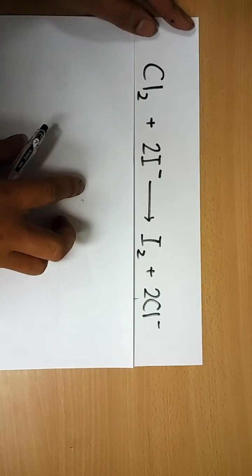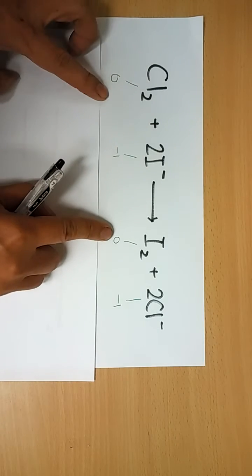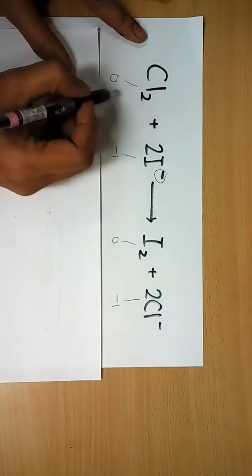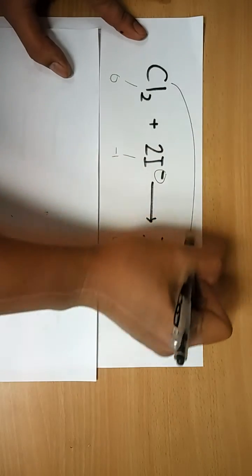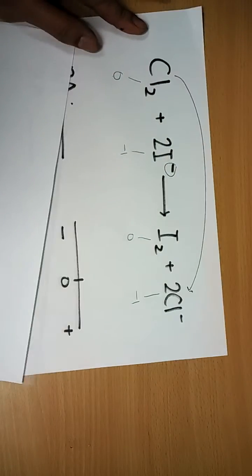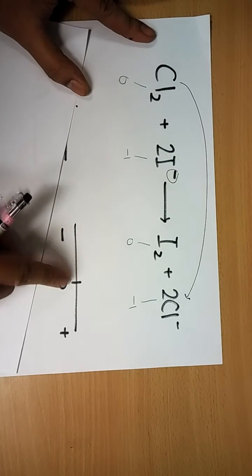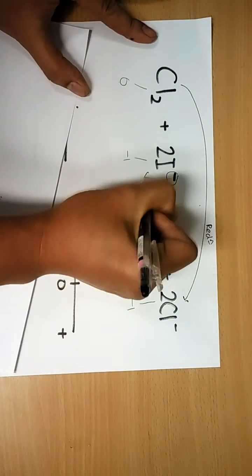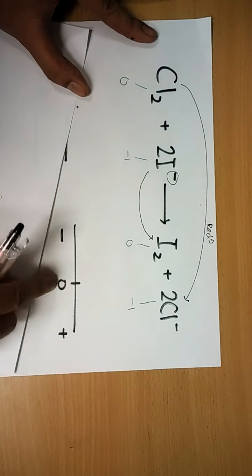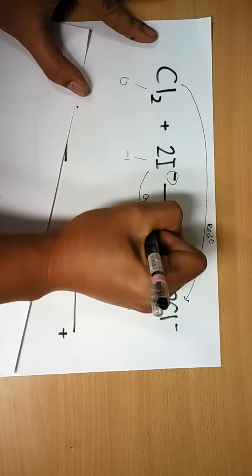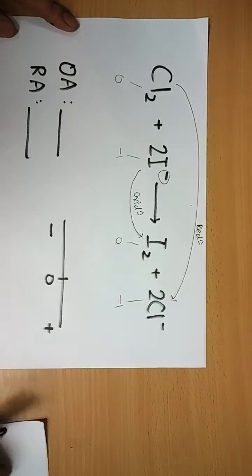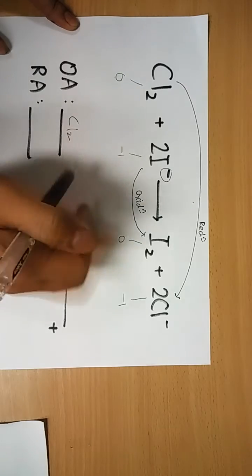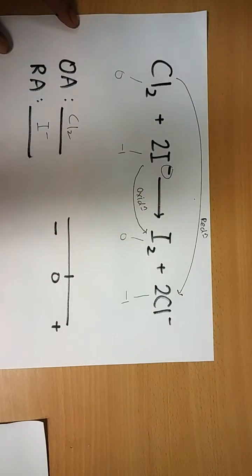This is a displacement reaction. Settle the oxidation states: both Cl2 and I2 are elements, so 0. The ions have a charge of minus 1. The coefficient of 2 doesn't come into play — it's just for balancing. Cl2 goes from 0 to minus 1, which is reduction. I- goes from minus 1 to 0, which is oxidation. So Cl2 is the oxidizing agent, and I- is the reducing agent.